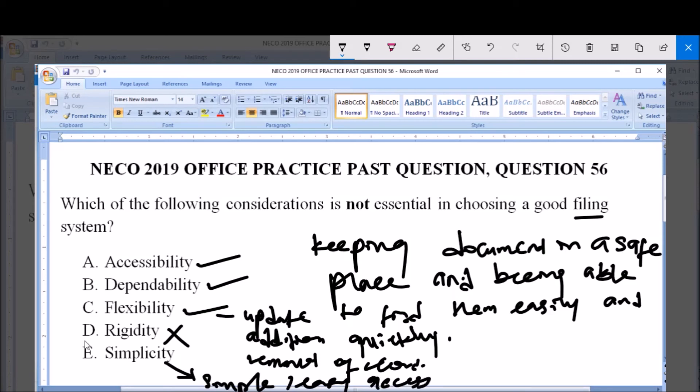So, the answer to this question is option D, Rigidity, because rigidity is not a consideration for a good filing system.